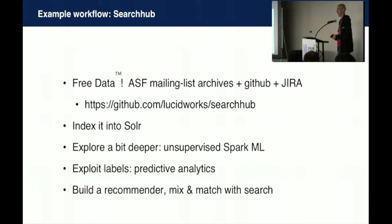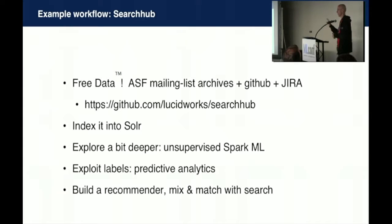Example workflow for when you don't have a lot of operational support and you're working with disparate data: go into a new client and want to help with their e-commerce site or fraud detection. The workflow uses Search Hub, an open-sourced set of code that gives you an RDD backed by a Solr index. It's a 20 news groups plus-plus style environment with all the ASF mailing list archives. You can crawl it, pull in the GitHub from each open source ASF project, and the JIRA tickets, and start linking them all together.